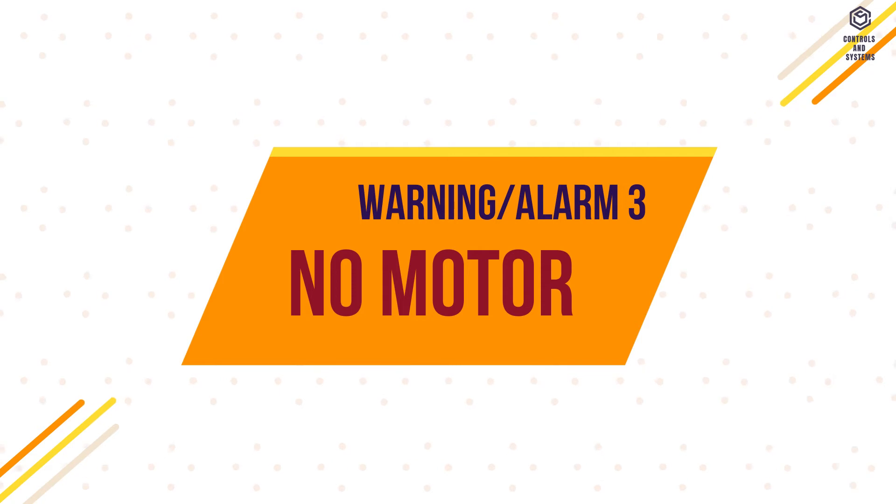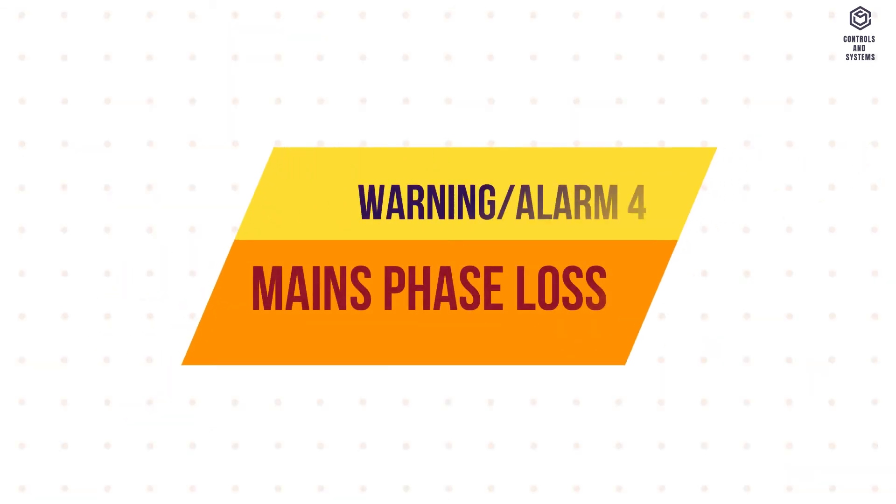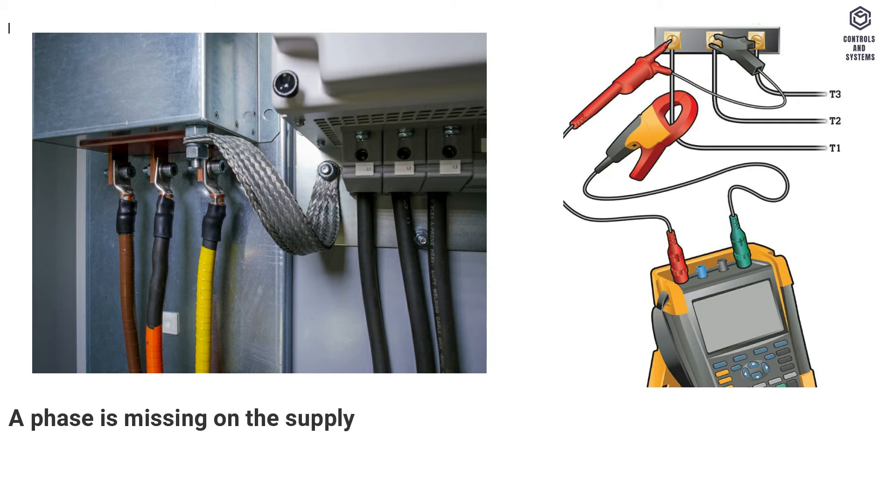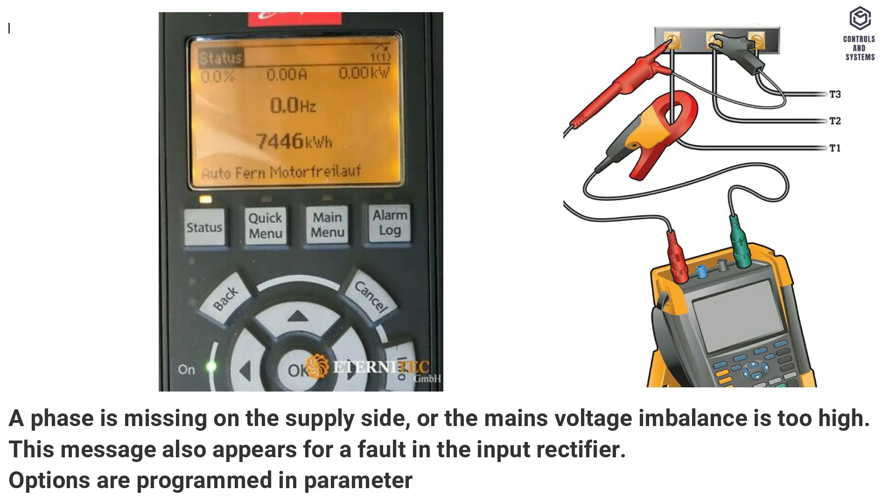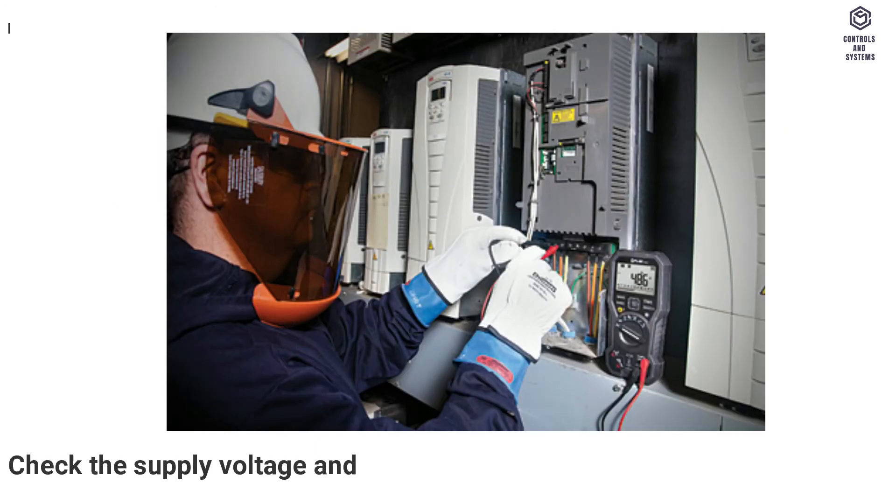Warning, Alarm 3, No Motor. No motor is connected to the output of the frequency converter. Warning, Alarm 4, Mains Phase Loss. A phase is missing on the supply side, or the mains voltage imbalance is too high. This message also appears for a fault in the input rectifier. Options are programmed in parameter 1412 response to mains imbalance. Troubleshooting methods: Check the supply voltage and supply currents to the frequency converter.